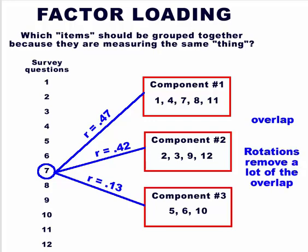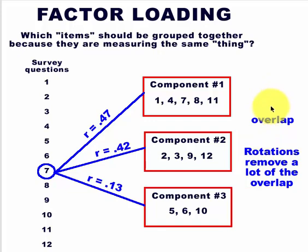We try to get rid of overlap by using a rotation. The orthogonal rotation — that's Varimax on SPSS — normally does a really good job of raking out any overlap between which new component these items should go under. But it doesn't get rid of all of it. A rotation will remove the overlap, but sometimes it won't.